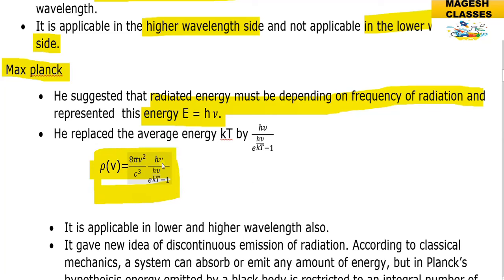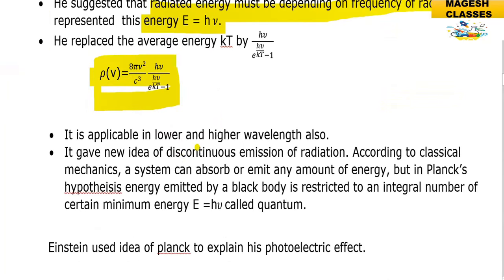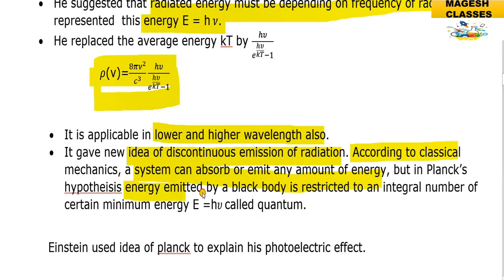Planck's formula is applicable for both lower and higher wavelengths. It introduced the new idea of discontinuous emission of radiation. According to classical mechanics a system can absorb or emit any amount of energy, but in Planck's hypothesis the energy emitted by a black body is restricted to integral multiples of a certain minimum energy: E = hν, which is called a quantum.